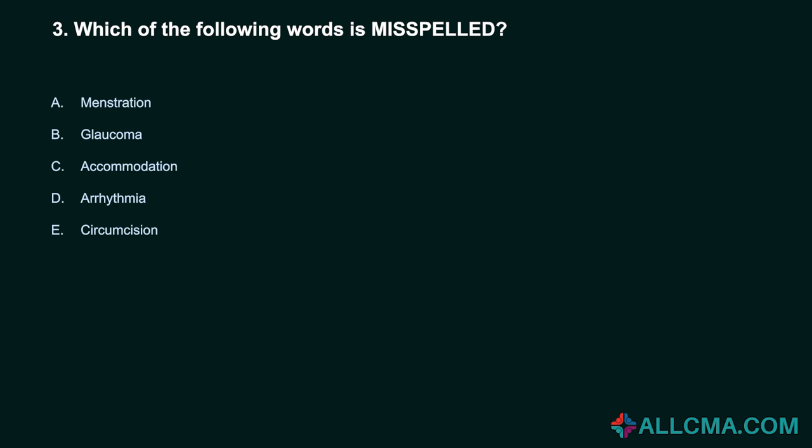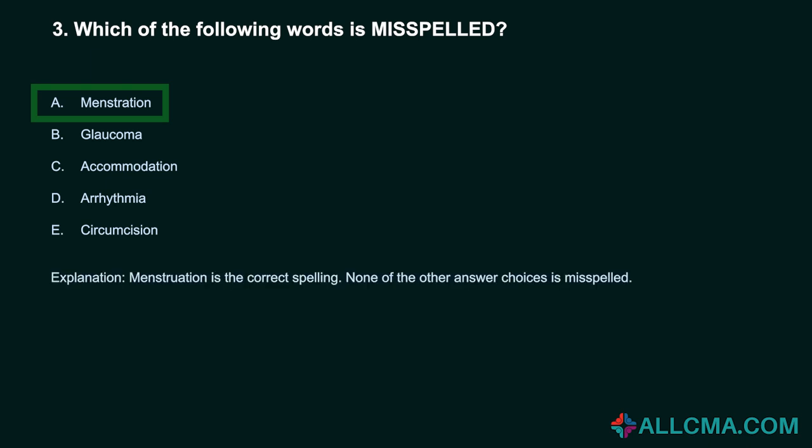Question 3: Which of the following words is misspelled? A. Menstruation. B. Glaucoma. C. Accommodation. D. Arrhythmia. E. Circumcision. Correct answer: E. Menstruation. Menstruation is the correct spelling. None of the other answer choices is misspelled.